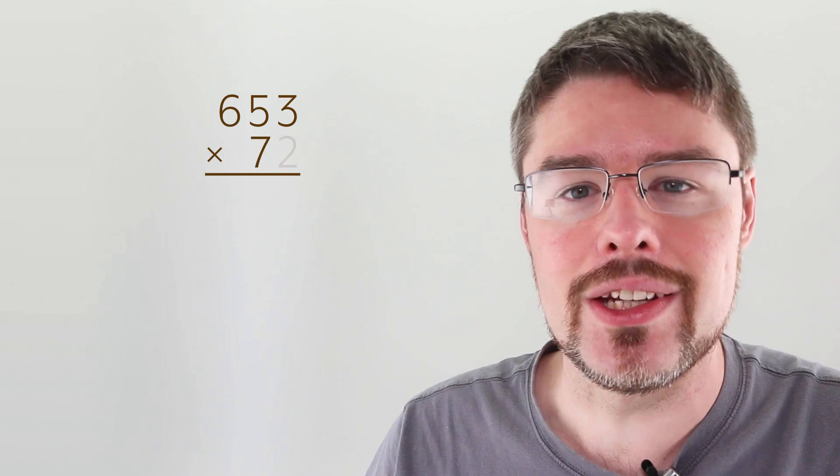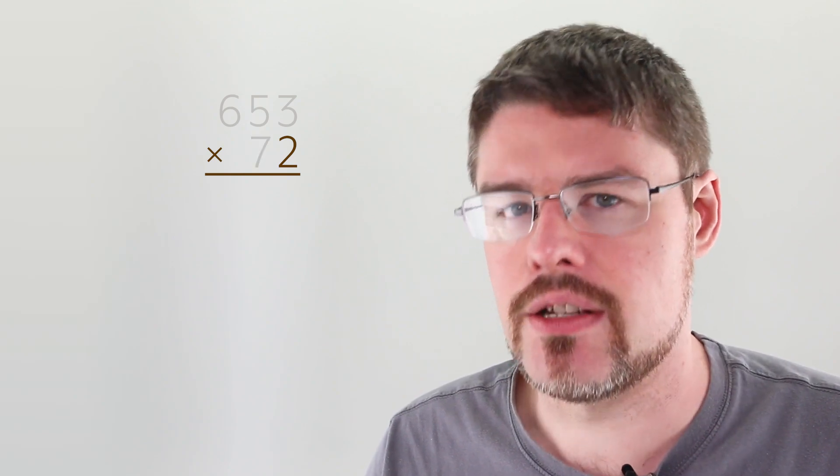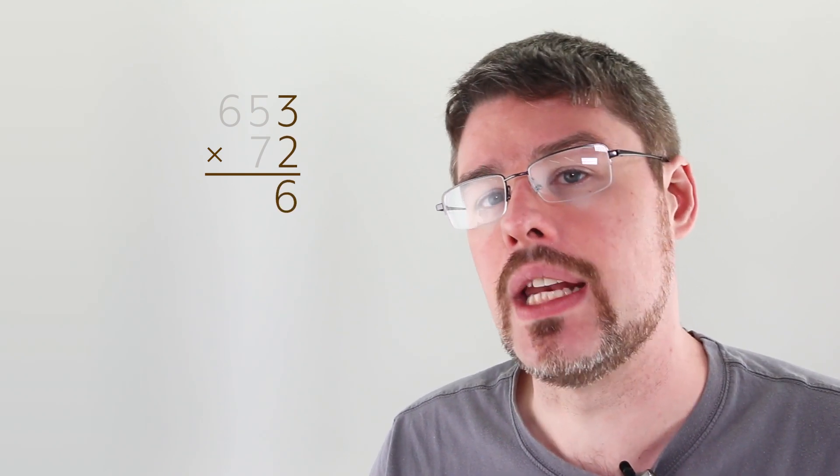Let's start with an example. Let's multiply the numbers 653 with 72. We're going to start with the bottom number, 72, and begin with the right digit, multiplying that by the right digit of the top number. So in this case we have 2 times 3 giving us 6, which we'll write here.